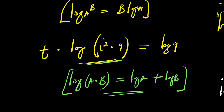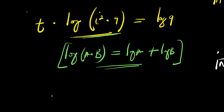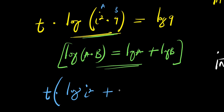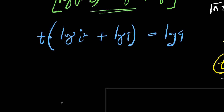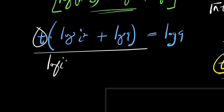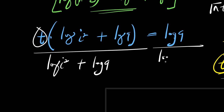Applying the product rule for logarithms, we have t times the quantity log of i squared plus log 9, and this equals log 9. To isolate t, I divide both sides by log i squared plus log 9.